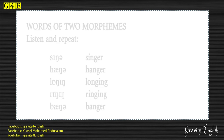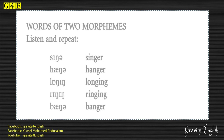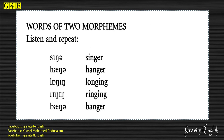Words of two morphemes. Listen and repeat. Singer. Hanger. Longing. Ringing. Banger.